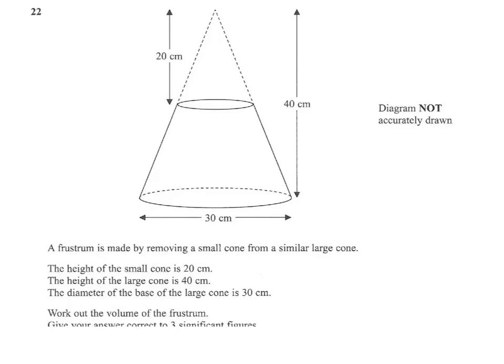A frustum is made by removing a small cone from a similar larger cone. The height of the small cone is 20 cm, the height of the large cone is 40 cm. So that tells us straight away that the dimensions of the larger cone are double the dimensions of the smaller cone.